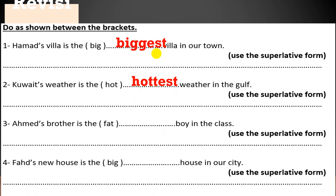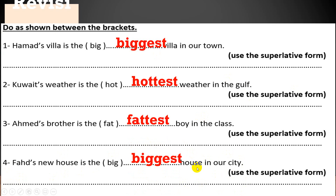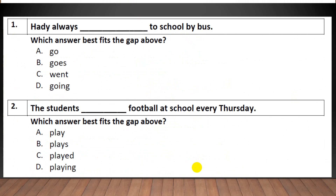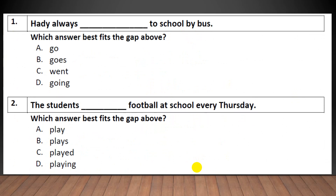Hamad's brother is the fattest in class because we are comparing him to the whole class. Fahad's new house is the biggest house in our city, so I am comparing Fahad's house with all the houses in the city. That's right.